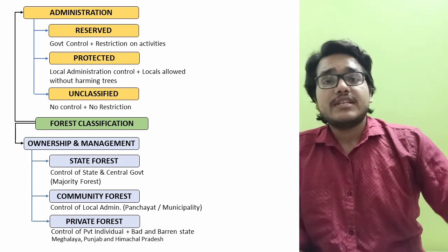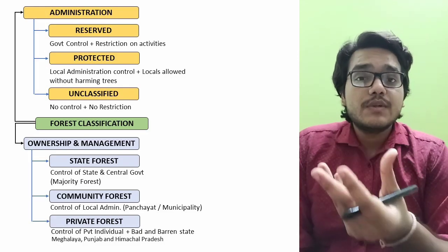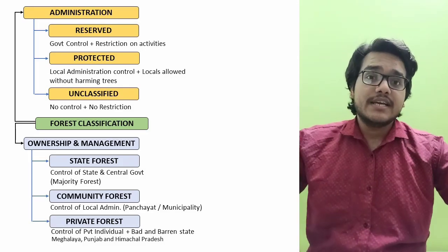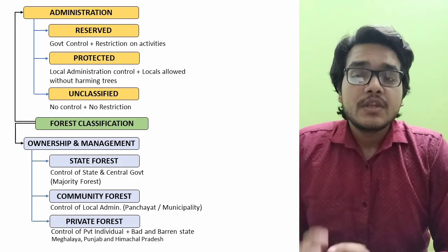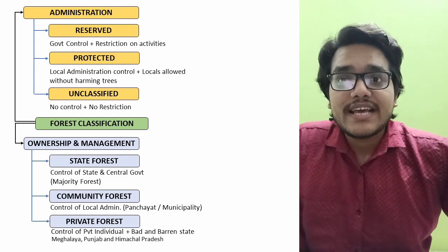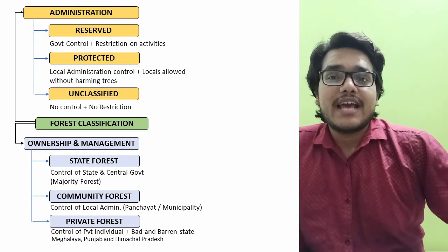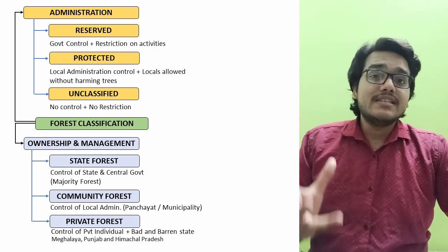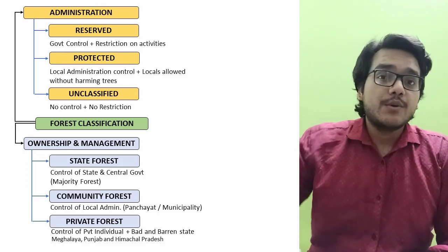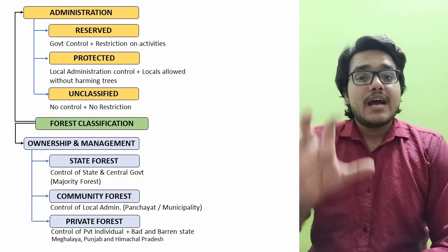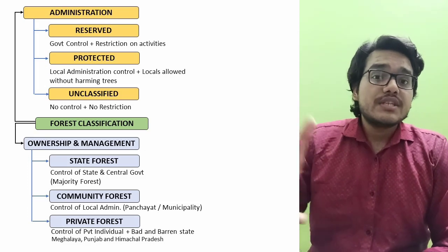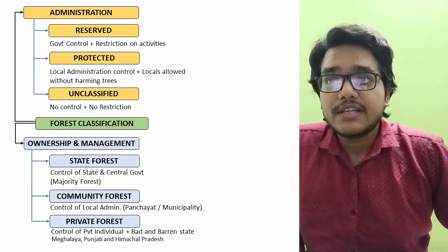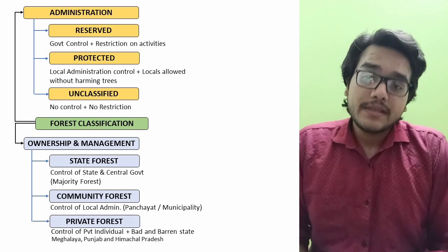The third classification is private forest — forests owned by individuals. One important thing is that this is not farmland; it is a big area. As a result of individual ownership, many such forests are in a haphazard and barren condition, meaning they are in very bad shape with no trees to sustain a whole ecosystem. States such as Odisha, Meghalaya, Punjab, and Himachal Pradesh are where you will find private forests.